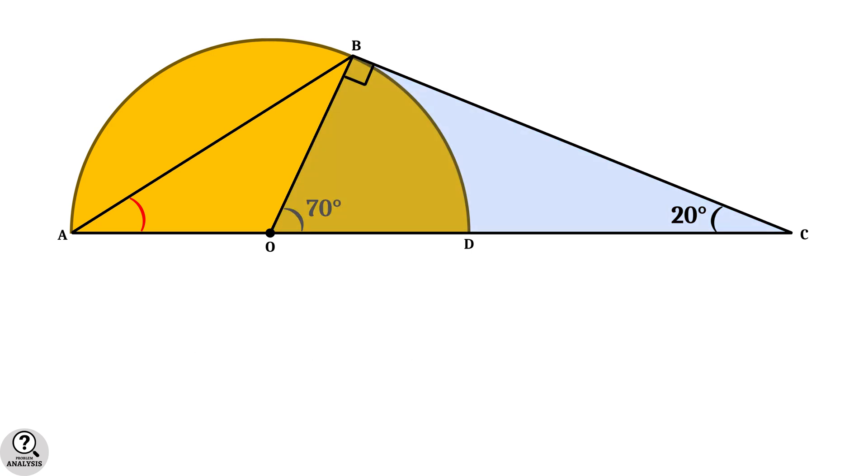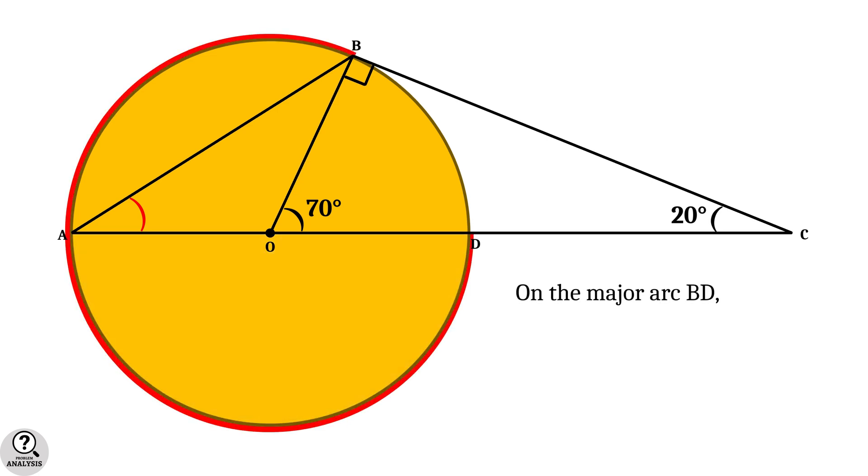Now extend the semicircle to a complete circle and consider the major arc BD. Then you can see that angle BOD is the angle with the center which is equal to 70 degrees, and angle BAD is the angle on the arc. Then by the first property we have seen, this angle is equal to half of the angle BOD. That is half of 70 degrees, that is equal to 35 degrees.